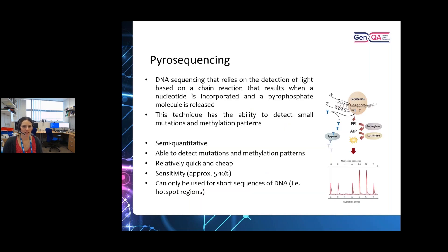Here are a couple of the technologies in a bit more detail and why we might choose them. Pyrosequencing is a nice chemistry technology which allows you to sequence short strands of DNA in a semi-quantitative way, which is very useful. It also allows you to detect methylation patterns in those short stretches — you can target known sites which are methylated and look at the level of methylation. It's relatively quick and cheap to run and can be validated down to about 5% variant allele frequency. So it's very good for hotspot regions of short sequences of DNA where you need good sensitivity and a rapid, cheap assay.